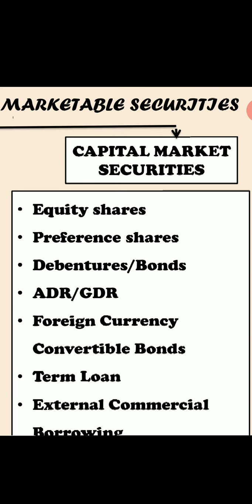Companies use debentures when they need to borrow money at a fixed rate of interest, for example for expansion. There are types like secured, unsecured, registered, bearer, convertible, non-convertible, first, and second. A debenture is a type of debt instrument that is not backed by any collateral security, and usually it will have a term greater than 10 years. Debentures are backed only by the creditworthiness and reputation of the issuer.